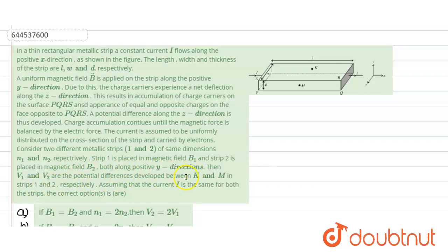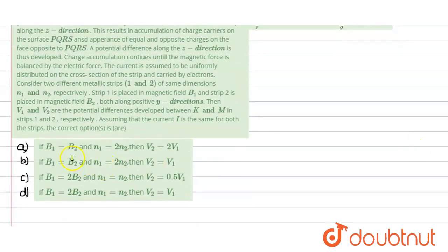Now we need to consider two metallic strips 1 and 2 of same dimensions. The strip 1 is placed in magnetic field B1 and strip 2 is placed in magnetic field B2 both along the y direction. Then V1 and V2 are the potential differences which are developed between K and M in the strips 1 and 2. Now assuming that the current is same for both the strips we need to match what is the correct option.